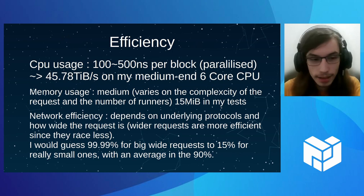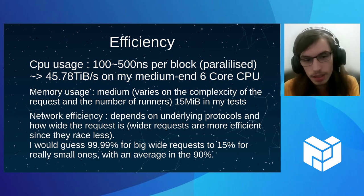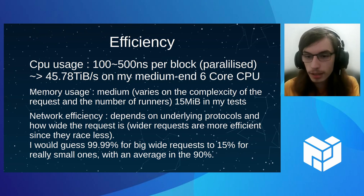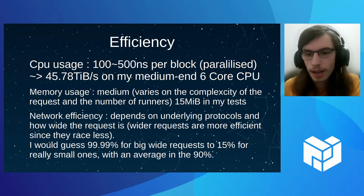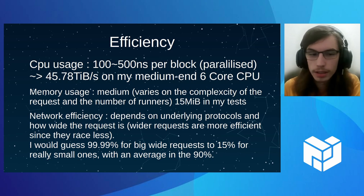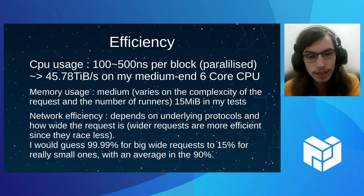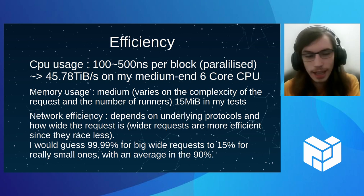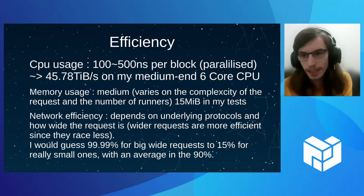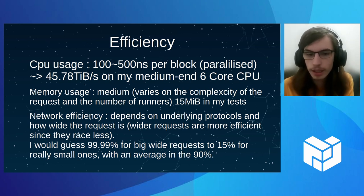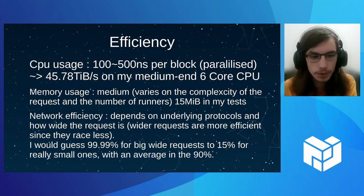For efficiency, the CPU usage is around 100 to 500 nanoseconds per block, counting only Rapid and not the underlying protocol — which is extremely good. In theory, you should be able to do 45 TB per second. Obviously you don't do that in practice. Basically, Rapid is so fast that all you care about optimizing is your actual underlying data transfer.